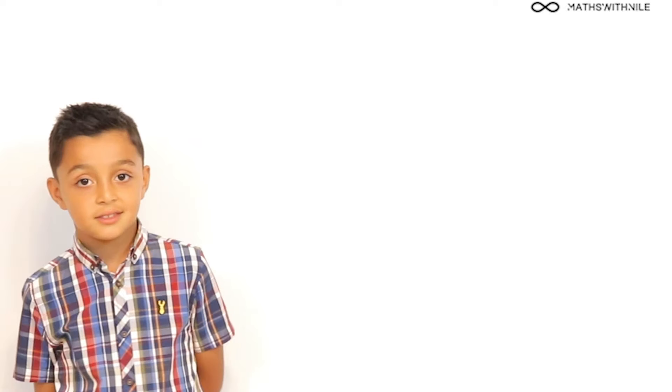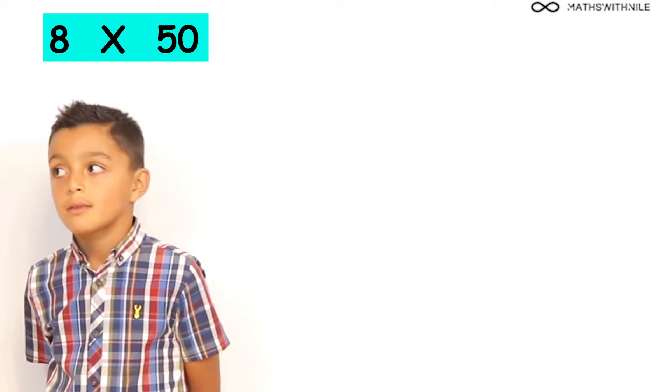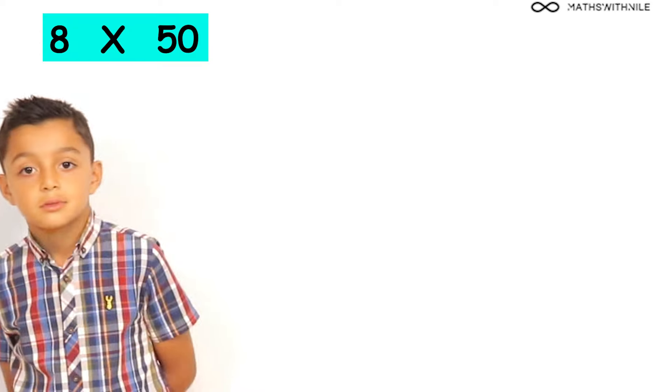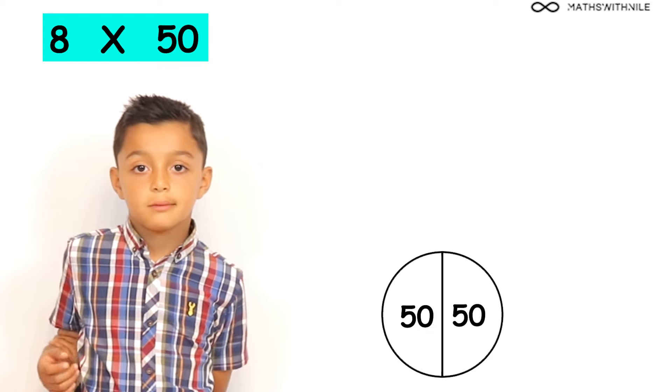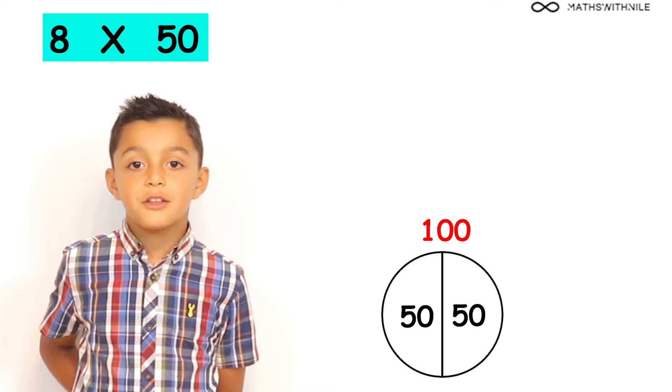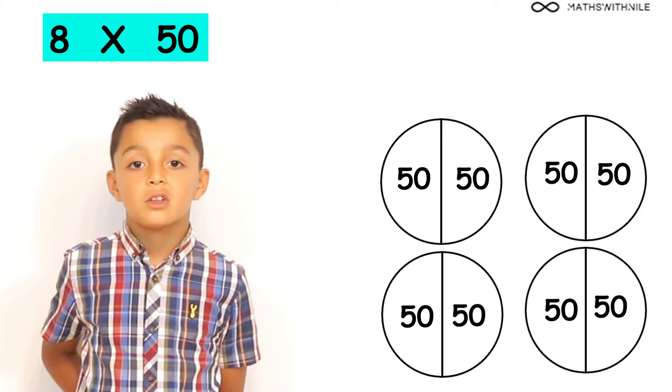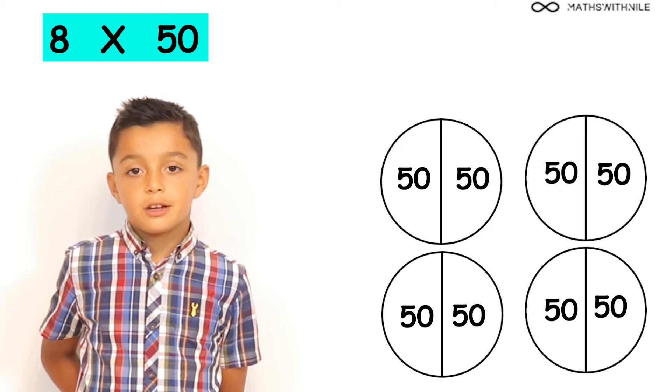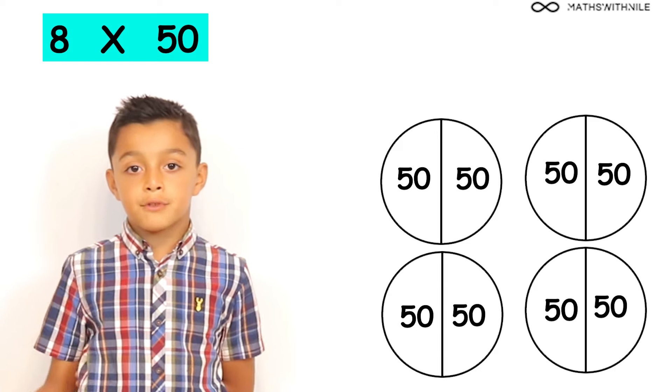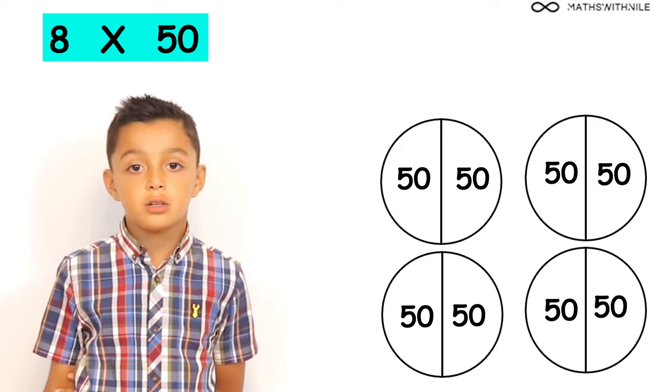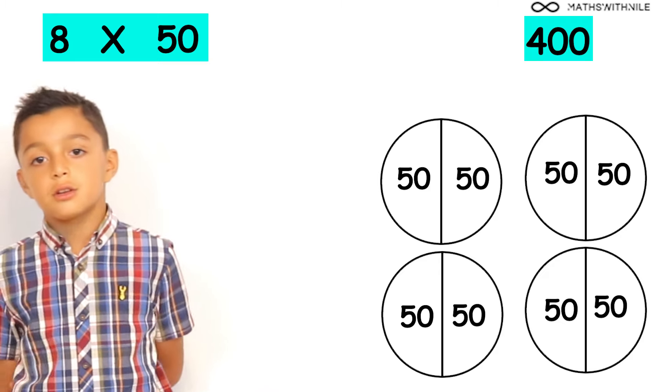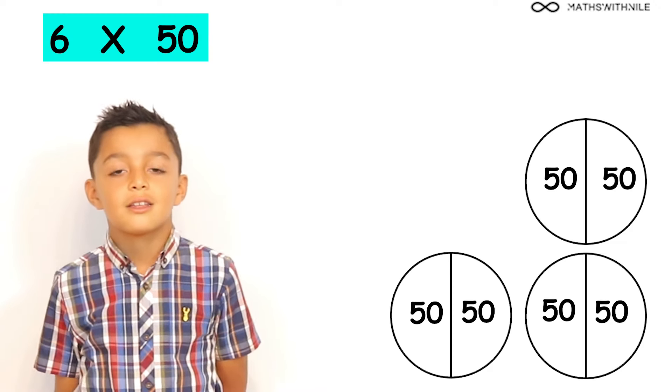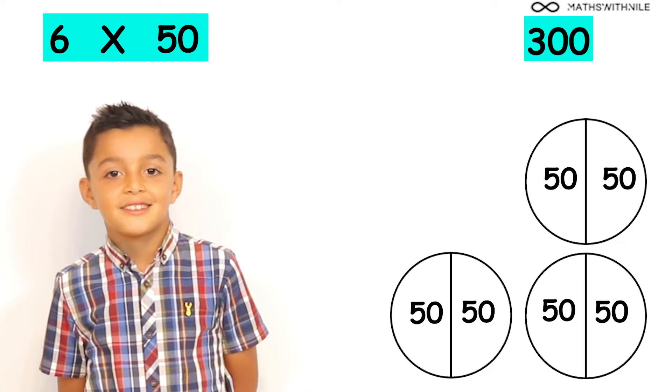What about 8 times 50? We know that for every 2 lots of 50 is equal to 100. So, we have 8 times 50, which is the same as 8 lots of 50. So, we could half 8, because every 2 in 8 is 100, so 400. Very good Niall. So, with that in mind, what is 6 times 50? 300. Excellent Niall.